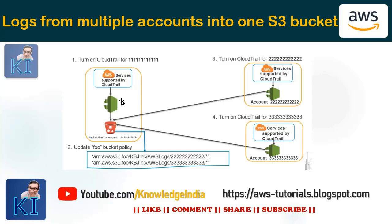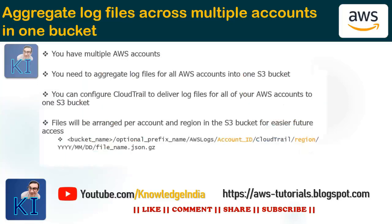So that's a really, really good practice. If you have seen our other video related to organizations, I explained that in an organization you will have a master account and multiple child accounts. A good practice would be that from all these different child accounts, you write the CloudTrail logs into one master account. When you have multiple AWS accounts and you want to aggregate logs from different accounts into one S3 bucket in one account, then you can go ahead and do this.